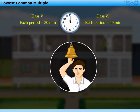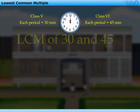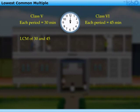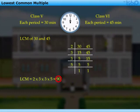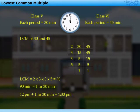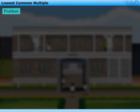The school begins at 12pm. To find the exact time of common recess, he calculates the LCM of 30 and 45, which is 90. 90 minutes, that is 1 hour 30 minutes after 12pm, is 1:30pm. Hence, he rings the bell at 1:30pm.